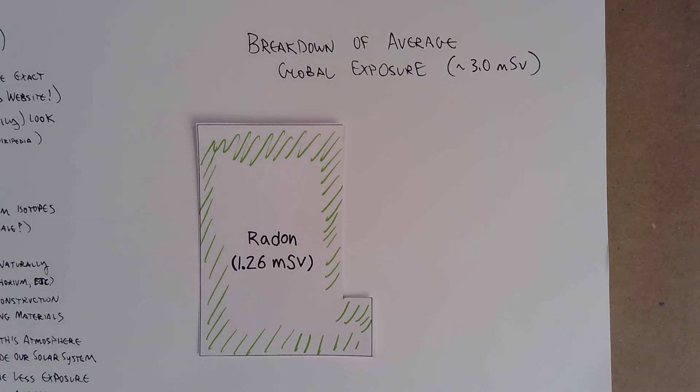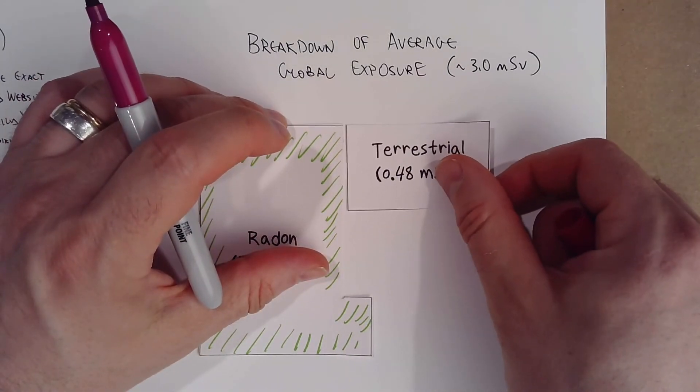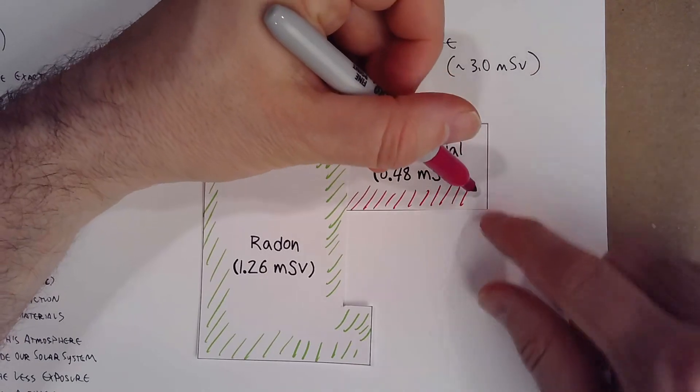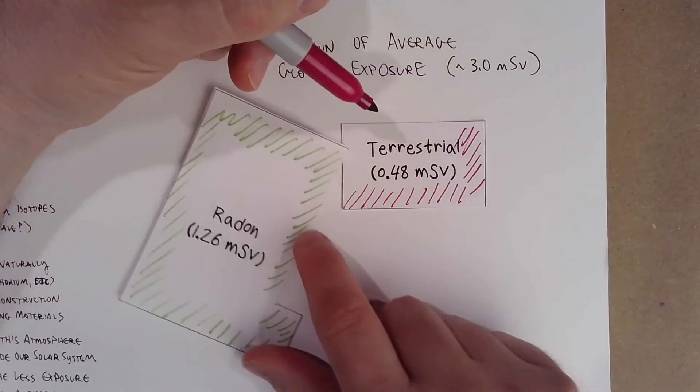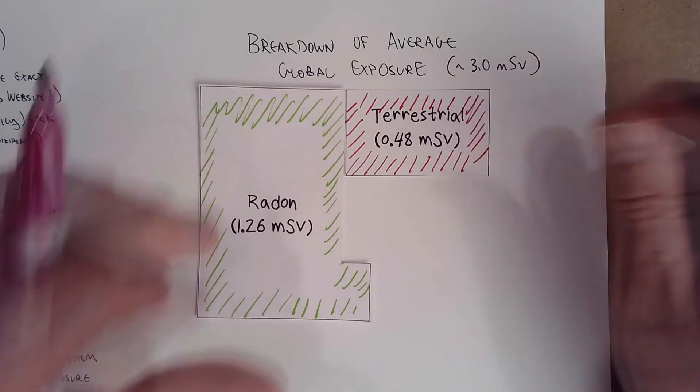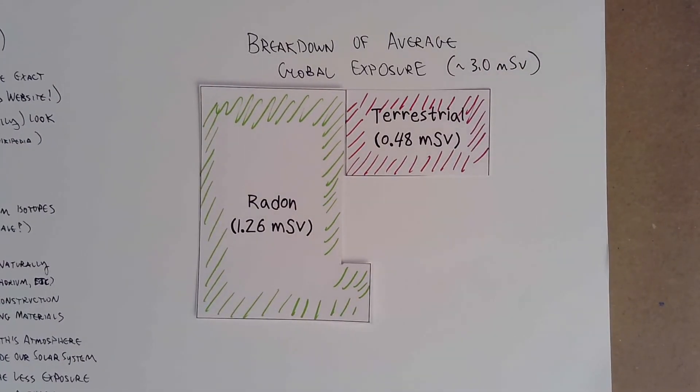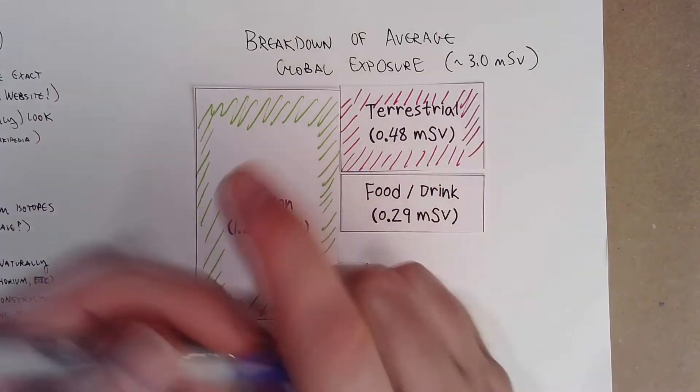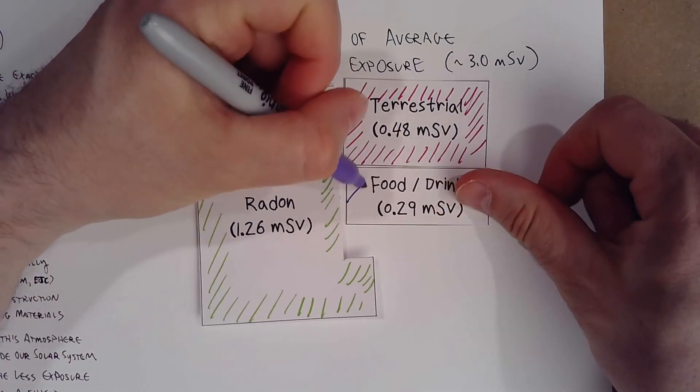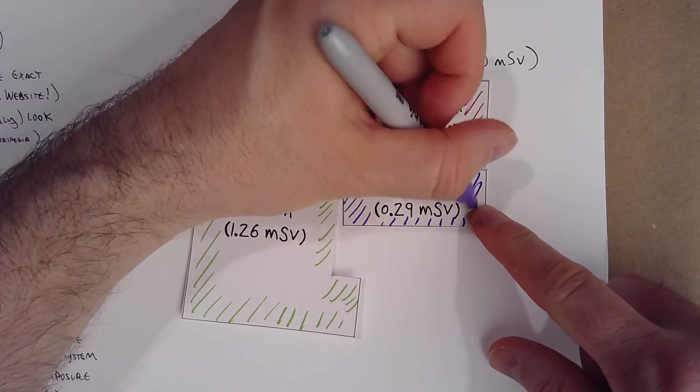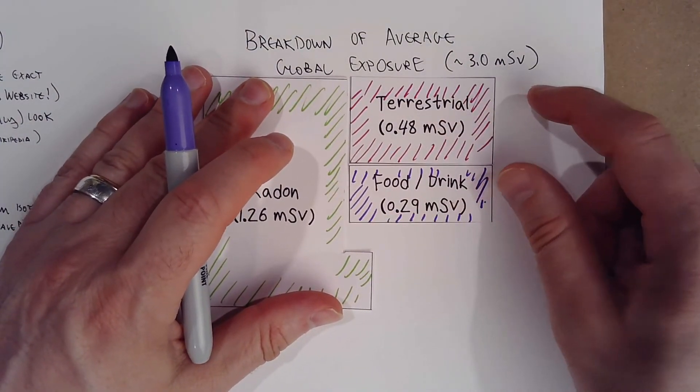So you can see that's a decent chunk. And again, this varies widely by location. Some places have relatively little radon. Some places have a lot of radon. So case by case, you just got to see where you live and see whether or not you're in a high risk area. Next up, we mentioned terrestrial radiation. Terrestrial radiation is radiation, again, from the ground itself, building materials. We'll color this bad boy in. Add a little bit of, make it stand out a little bit. But you can see radon a much higher percentage than terrestrial radiation is. And these are all still considered natural exposures. From there, we have food and drink.